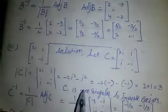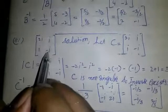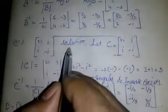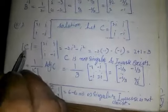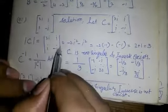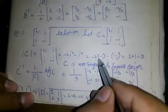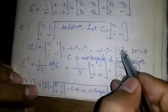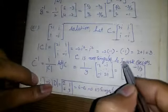Part 3: let C = [[2i, i], [i, -i]]. The determinant of C equals (2i)(-i) minus (i)(i) = -2i² - i² = -2(-1) - (-1) = 2 + 1 = 3. C is non-singular, so its inverse exists.